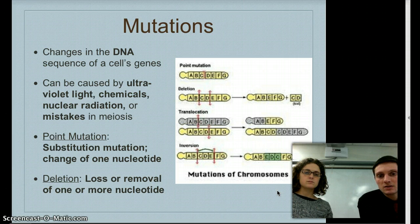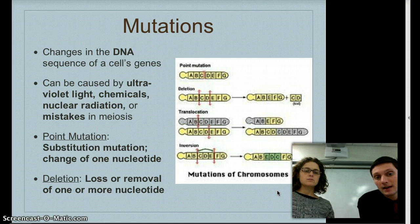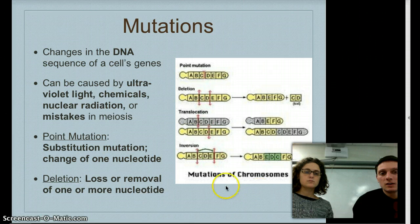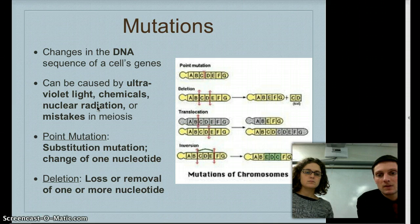A good example of an event causing mutations is when the atomic bomb was dropped in Japan. As a result, many people in the area got cancer years after the bomb went off because that nuclear radiation caused mutations in their bodies. The bomb killed a lot of people, but the resulting mutations from cancer also killed many people from the fallout of that event.